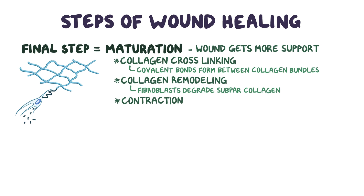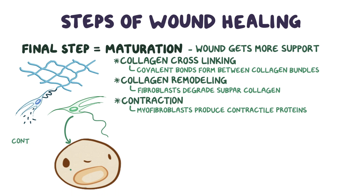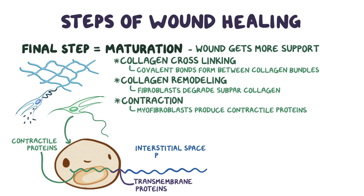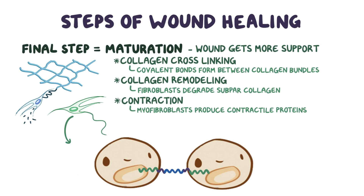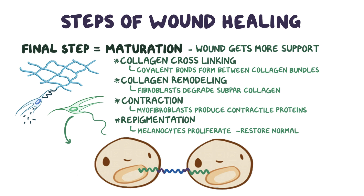After that, there's contraction, which is when special fibroblasts called myofibroblasts produce contractile proteins within the cell. These contractile proteins are attached to transmembrane proteins, which are attached to proteins in the interstitial space. So when contractile proteins in the cell tighten, they pull on those proteins in the interstitial space, ultimately pulling the edges of the wound together. This step is particularly important in large wounds that must heal by secondary intention. Finally, there's the step of repigmentation, which is when melanocytes begin to proliferate, helping restore the normal color to damaged skin.